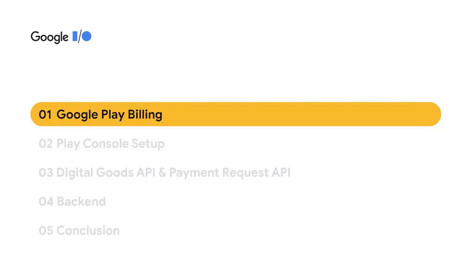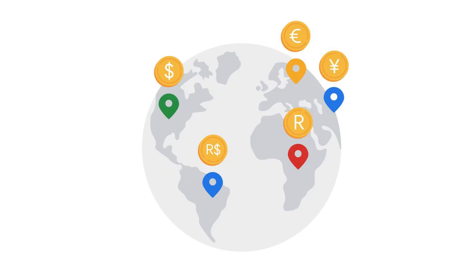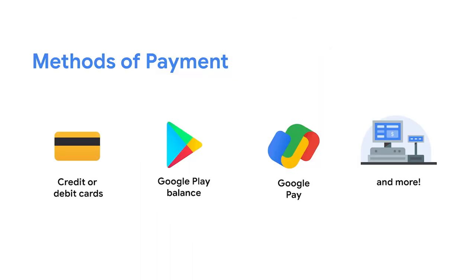Before we get into the implementation details, let's first discuss some of the benefits of Play Billing. It's likely that Play Store users are already familiar with the Play Billing UI and purchase flow. For your users, this creates a unified billing experience they are already comfortable navigating. Play Billing supports over 135 countries and multiple local currencies, which simplifies transactions for you and global users. Play Billing also accepts different payment methods, including credit and debit cards, Google Play Balance, and Google Pay where available.